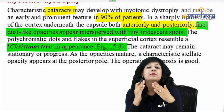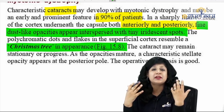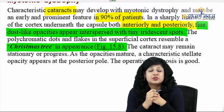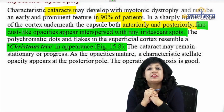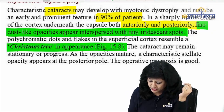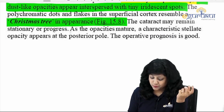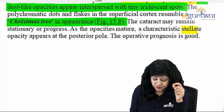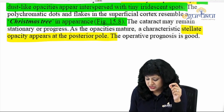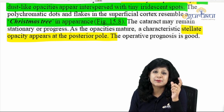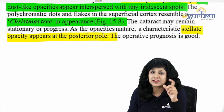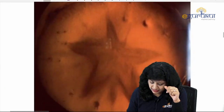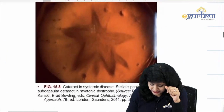Always try to think about the appearance when these fancy names are given. We have polychromatic needle-like appearance on slit lamp examination — that is why it is called the Christmas tree cataract. The cataract may remain stationary or may progress. Sometimes it is also called the stellate cataract because you get stellate opacities in the posterior pole.